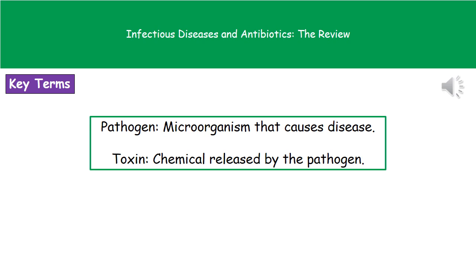Welcome to our review on infectious diseases and antibiotics. The first key term we need to understand is a pathogen, which is a microorganism that causes disease. Some of these pathogens release a chemical called a toxin, which can cause damage to our cells and therefore make us ill.